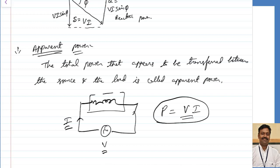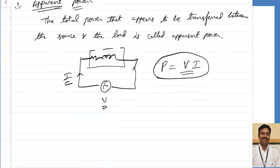But this is not the actual power, because we know the inductor will take power for one quarter of the cycle and return the power for the next quarter of the cycle. We have seen in the case of a pure L load that in one quarter cycle it takes power and the next quarter cycle it returns power back, so the net power equals zero. Apparent power is not the actual power.